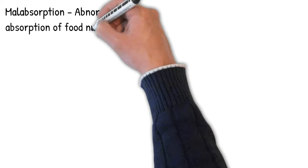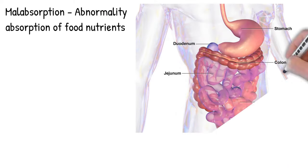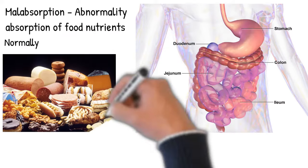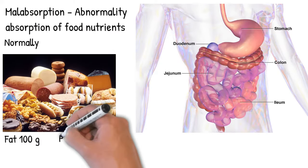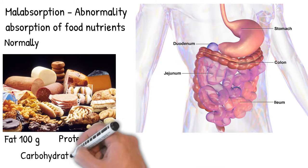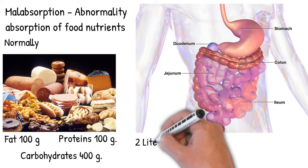Malabsorption is a state when the absorption of food nutrients across the gastrointestinal tract is not enough for normal body function. The average human consumes 100 grams of fat, 100 grams of protein, and 400 grams of carbohydrates daily, plus 2 liters of fluid, vitamins, and minerals.